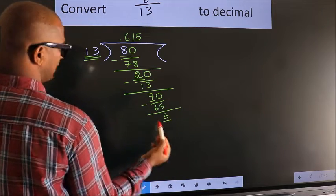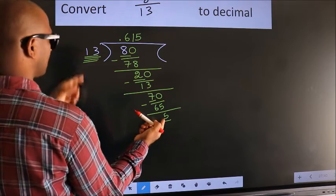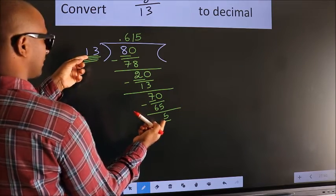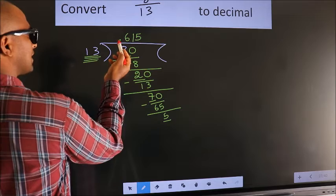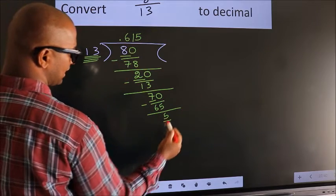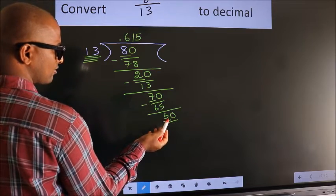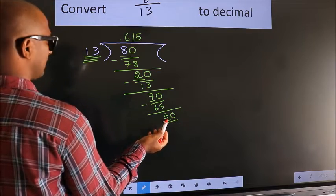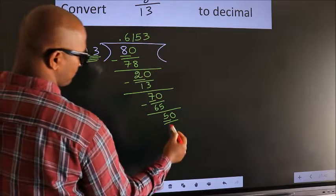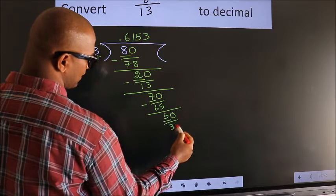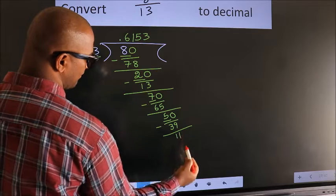Here we have 5, here 13. 5 is smaller than 13. And we already have the decimal, so we can directly take 0. So, 50. A number close to 50 in the 13 table is 13 threes, which is 39. Now, we subtract. We get 11.